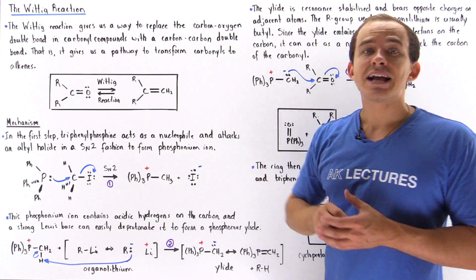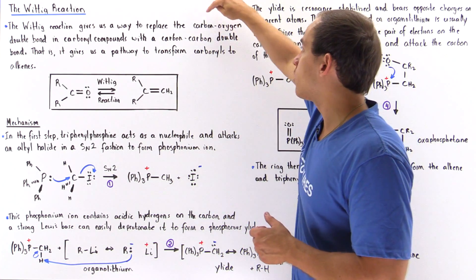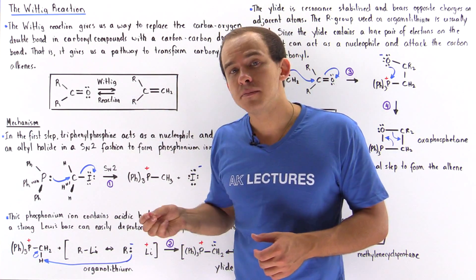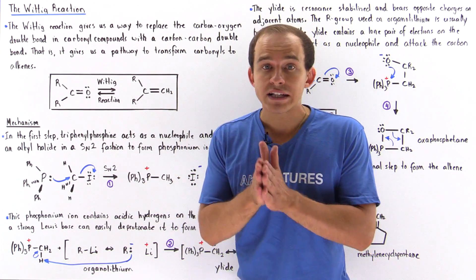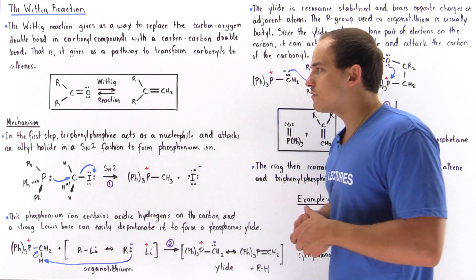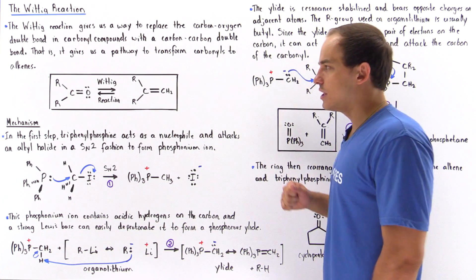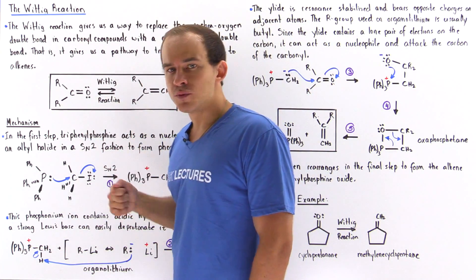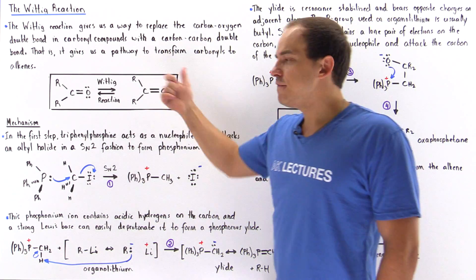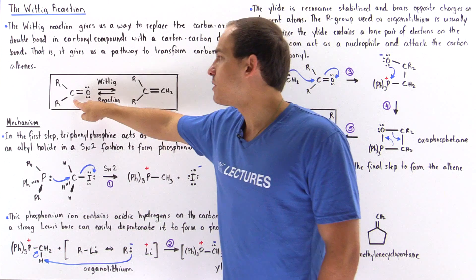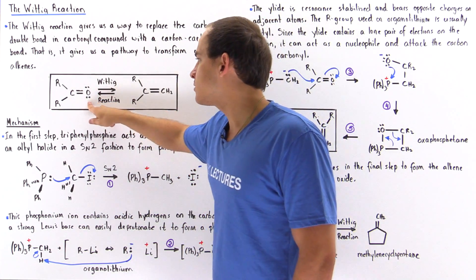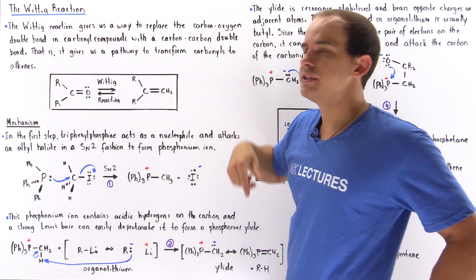The Wittig reaction gives us a way to transform the carbon-oxygen double bond into a carbon-carbon double bond — it transforms carbonyl groups into alkenes. The general form of this equation starts with a carbonyl group, which can be formaldehyde, an aldehyde, or a ketone. We undergo the Wittig reaction and transform the carbonyl group into an alkene, replacing the carbon-oxygen double bond with a carbon-carbon double bond.